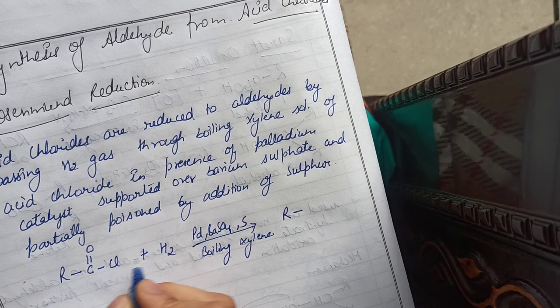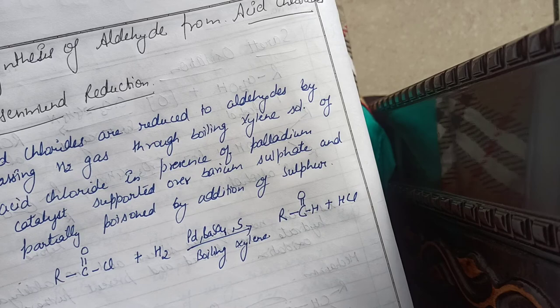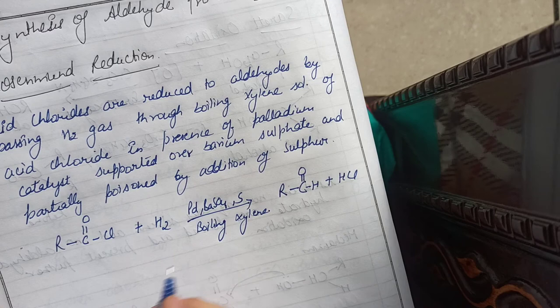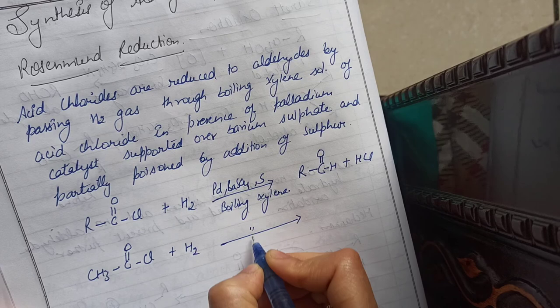The products are HCl and RCHO (aldehyde). For example: CH3COCl + H2 → CH3CHO + HCl. The COCl group becomes CHO, giving aldehyde and hydrochloric acid.